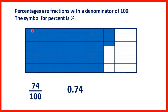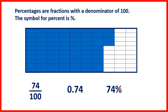Notice also that what we have is the same as 7 tenths and 4 hundredths, so that's why we have 0.74. But we can also write what we see here as a percentage — that's 74 percent. Notice it's not 74 over 100 percent, because the percentage sign tells us that it has a denominator of 100. The percentage sign tells us that it's a fraction over 100.